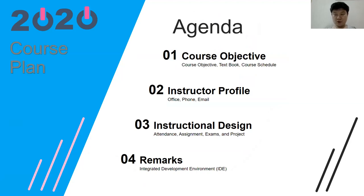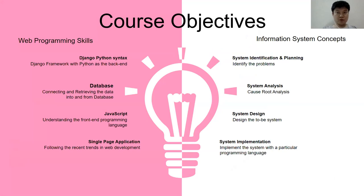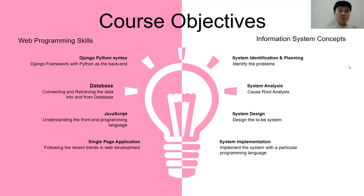The first thing I want to explain is the course objective, then the instructor profile, the instructional design, and the remarks including the integrated development environment. The course objective covers two big things you will learn this semester: web programming skills and information system concepts. Web programming skills are related to Django and Python syntax, and you will learn how to connect Python and Django, along with database, JavaScript, and single page applications.